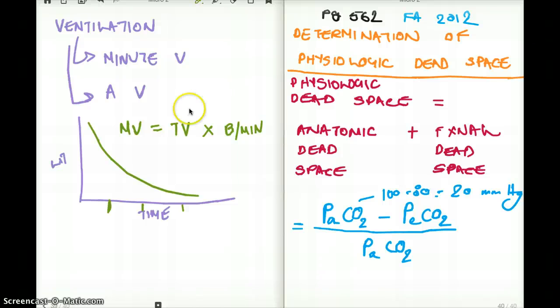But when we are talking about alveolar ventilation, what we are going to do is we are going to take tidal volume minus dead space times breaths per minute. We are going to subtract the dead space from our tidal volume to measure alveolar ventilation. It's tidal volume.